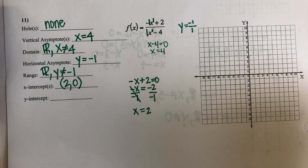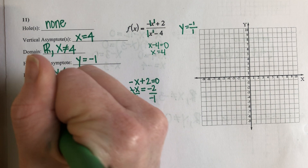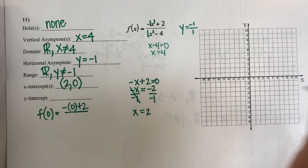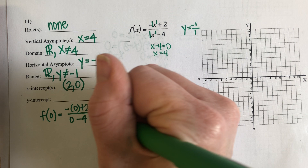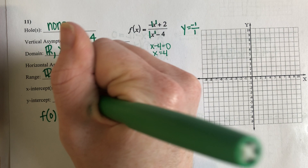The last characteristic I'm going to ask you to find is the Y intercept. I'm going to take my function and plug in zero anywhere I see an X. That would be zero plus two over zero minus four. Zero plus two is two, zero minus four is negative four, and this reduces to negative one half. So my ordered pair is zero, negative one half.